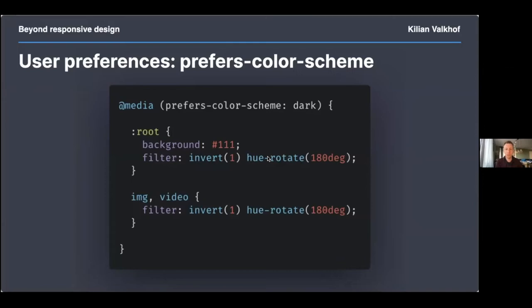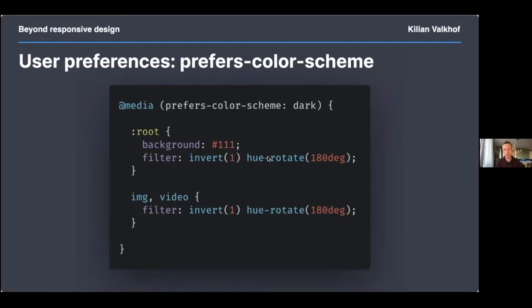Rotating the hue back essentially returns us to the original colors. The lightness will be different, but it's usually close enough. At this point images and videos look bad because they've been inverted and shifted, so we do the same thing again — since both the invert and the hue rotation are 180 degrees, applying them again brings images and videos back to their original colors. We also need to add an explicit background color, since the background hasn't changed along with the content.